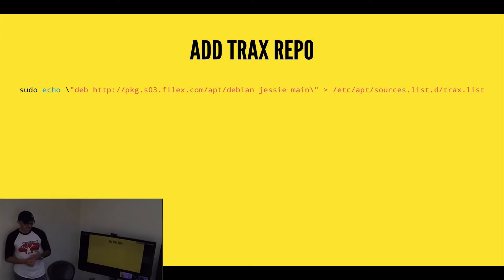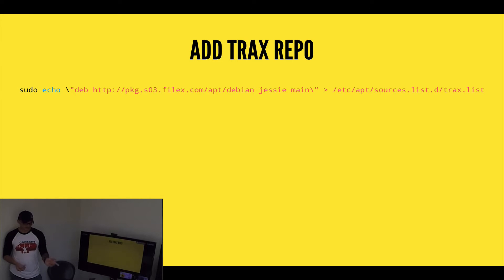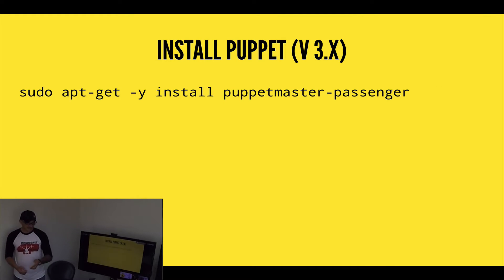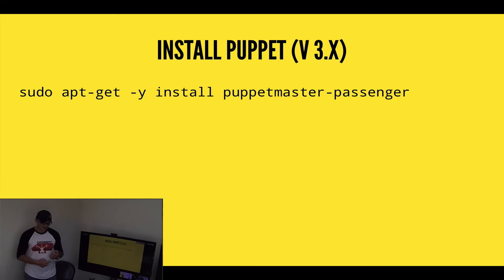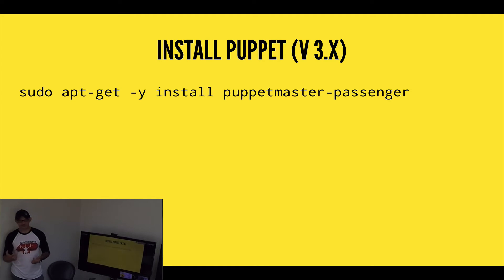The first line in our provisioning is to add the Trax repository. For Debian instances, we have our own Debian repository that we push packages to, and we have to add it using this statement here. With that done, we can install Puppet — we're still on version 3.6, so the syntax is 'apt-get install puppetmaster-passenger'. If you're using Puppet 4, the syntax has changed — it's actually called Puppet Server.